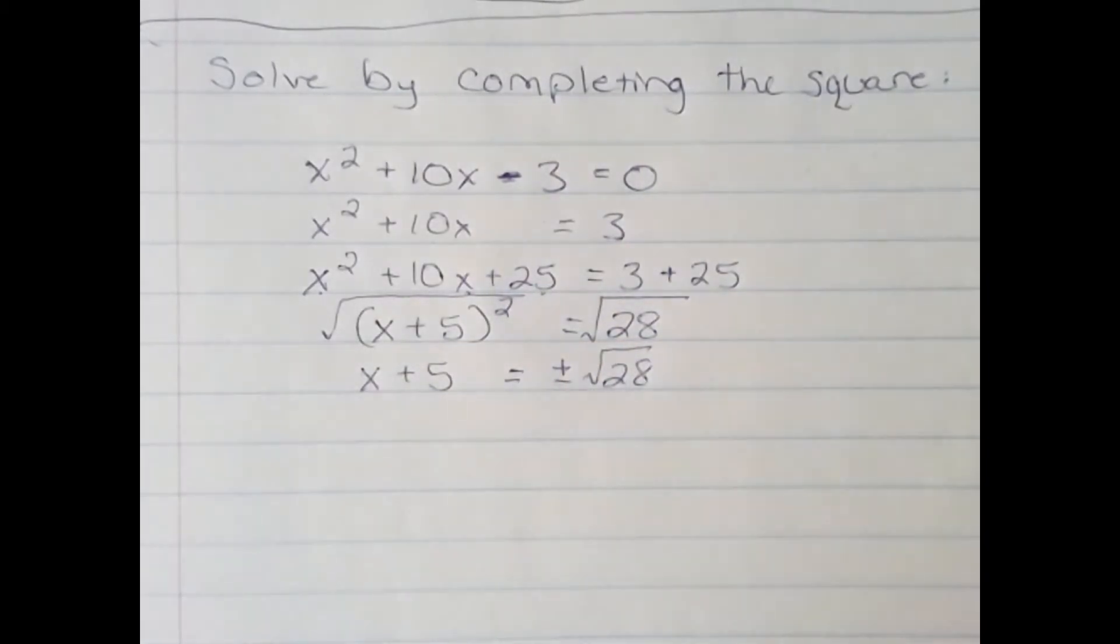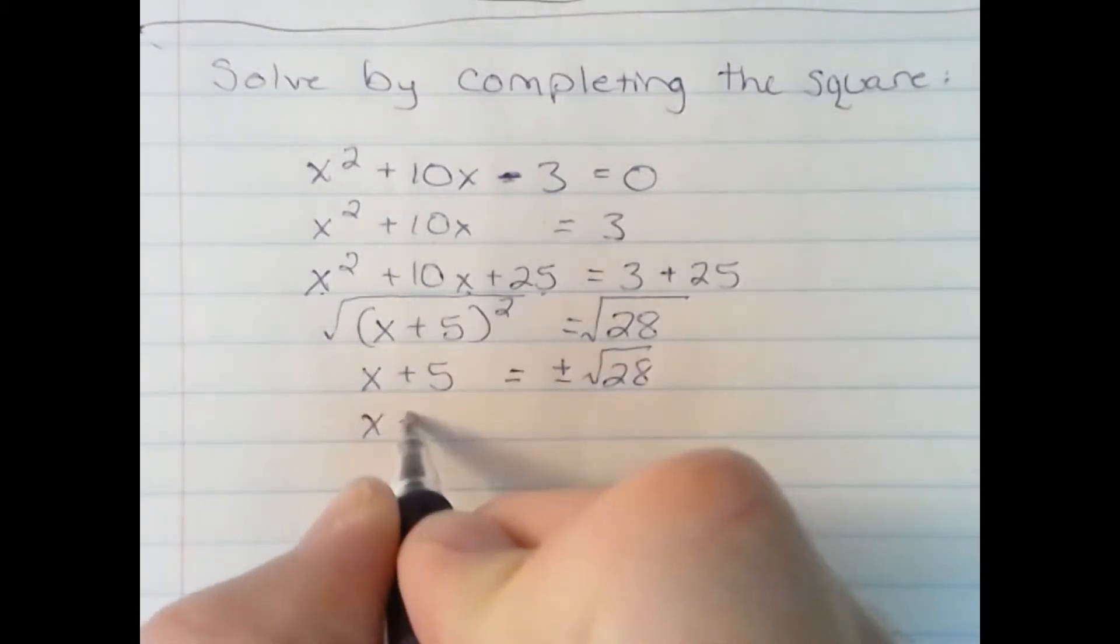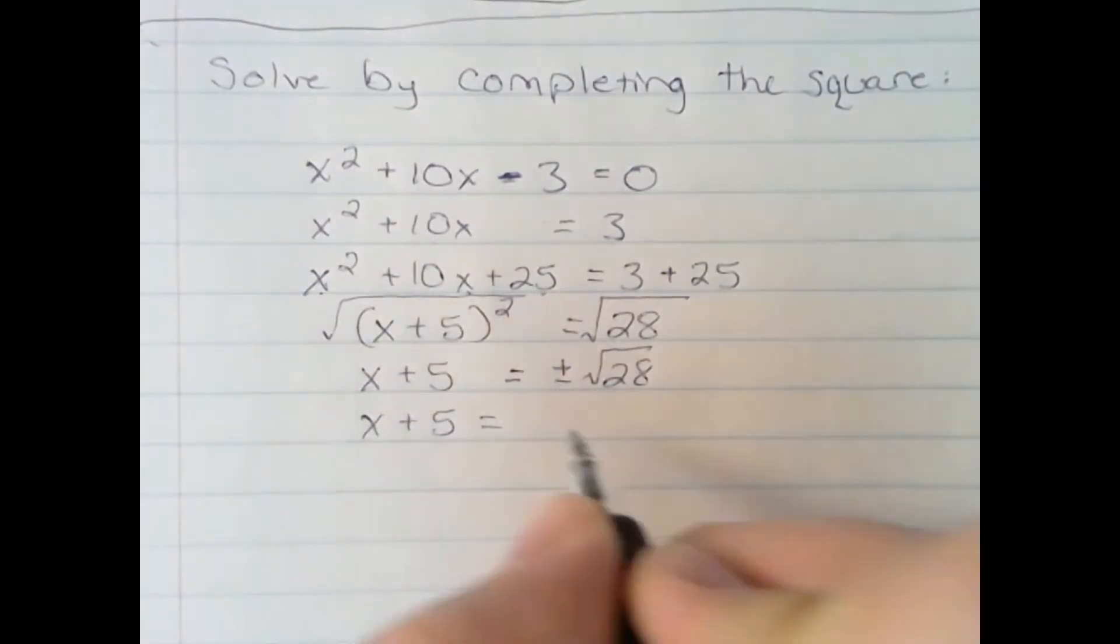So, let's simplify the square root of 28. We know that 28 can break down into 4 times 7, 4 being a perfect square.